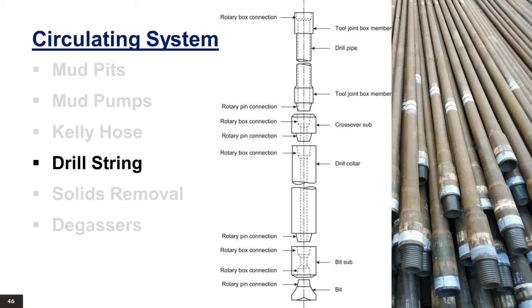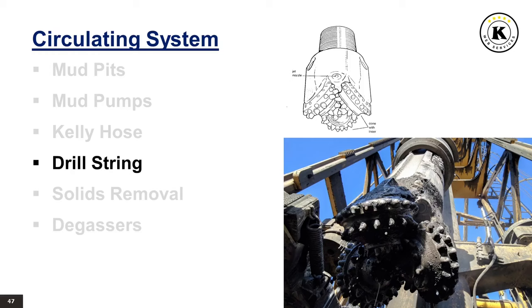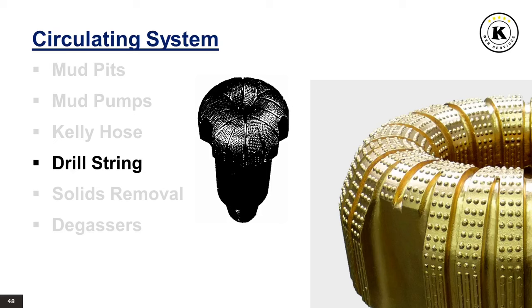Rotary bits may be classified into three general types. Drag bits have no moving parts but drill by the shoveling action of their blades on the formation. Roller bits, first designed by Howard R. Hughes in 1909, have from one to numerous individual rotating cones; 3-cone bits (tricone) are the most widely used in the oil field. The length and spacing of the teeth depend on the type of formation; hard formation bits may have tungsten carbide inserts instead of teeth. Specially designed jet nozzles direct the drilling fluid to produce high-velocity fluid stress on the bottom of the hole. Diamond bits drill by the scraping action of diamonds set in a steel matrix, normally used in hard formations where long bit life and reduced trip time are desirable.